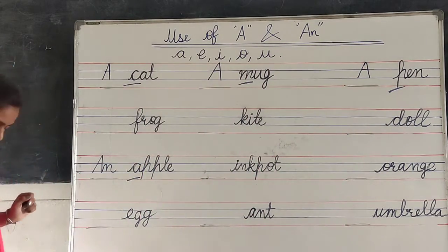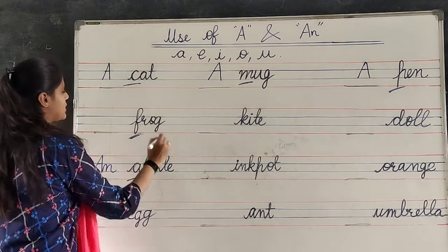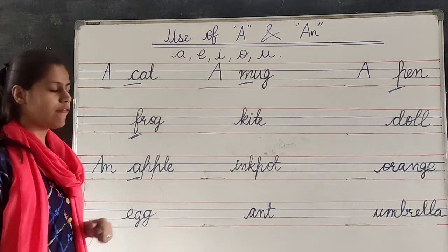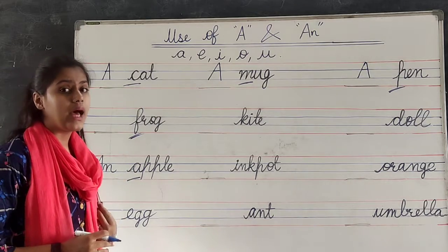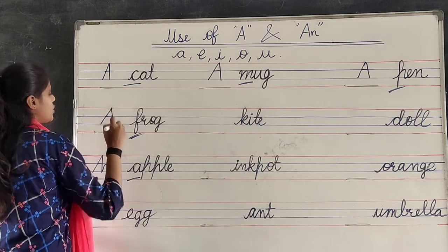Next, frog. F, R, O, G. Frog. First letter is F. Then we have to write A before it.